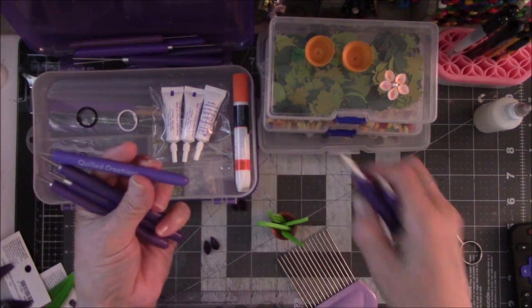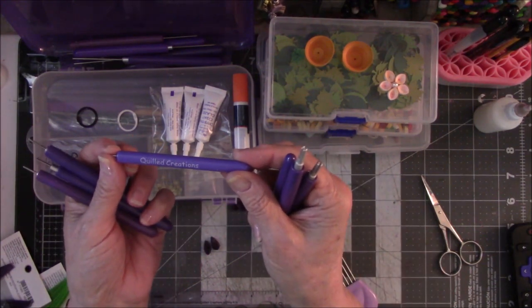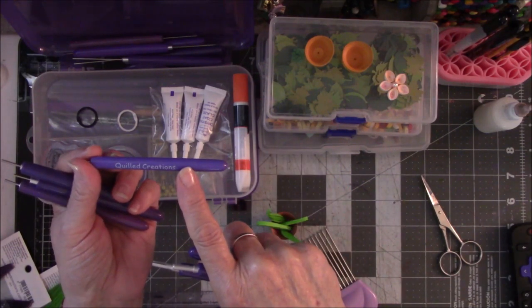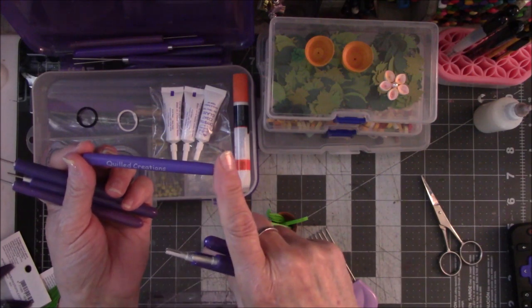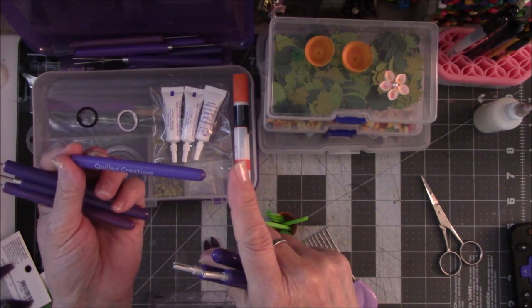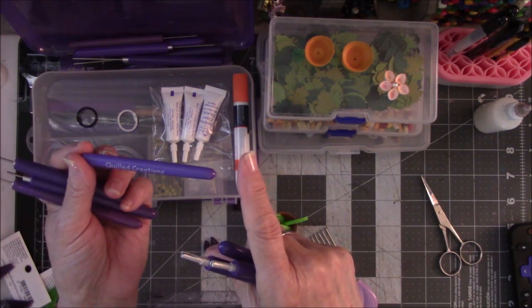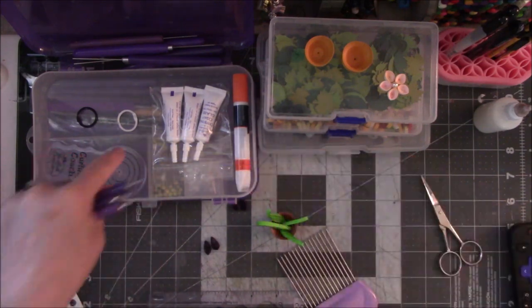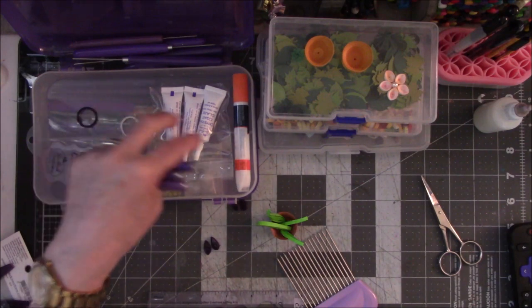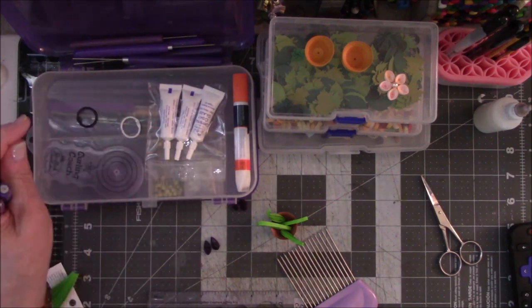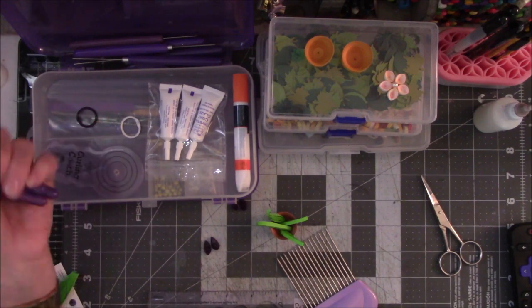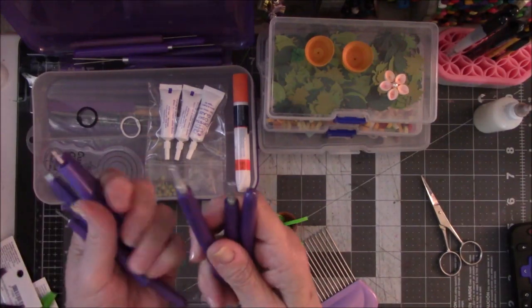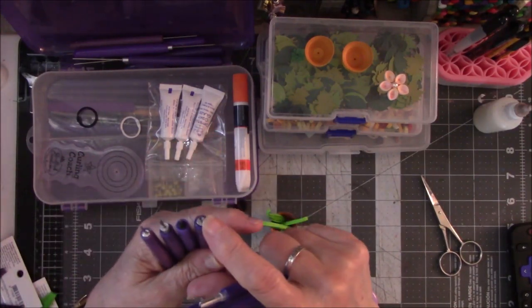I started using a company called Quilled Creations in upstate New York. When I started with them, they did not have their products in retail stores like Joanne's, the former A.C. Moore, Michaels, or Hobby Lobby. What they put in stores are basic beginner type stuff, like double-sided beginner kits with tools and glues. I've had many of these tools and they come in varying lengths.